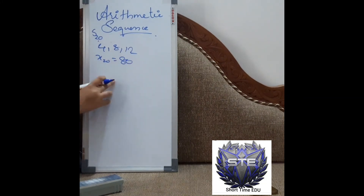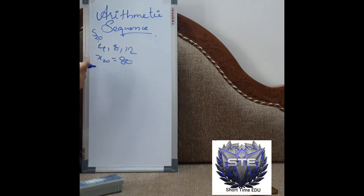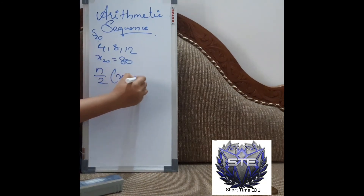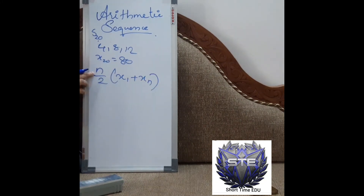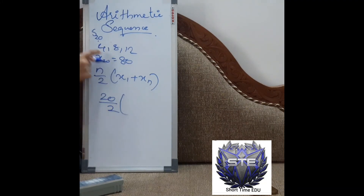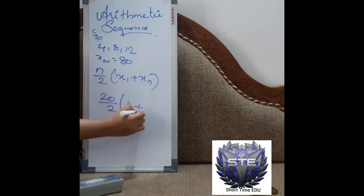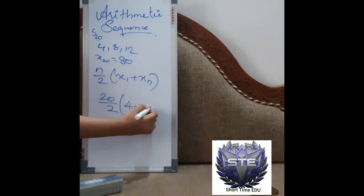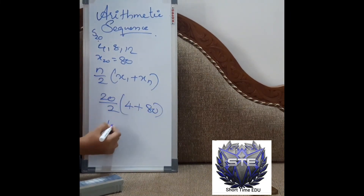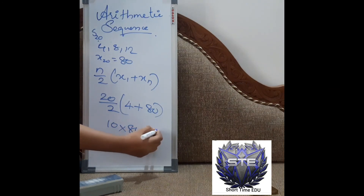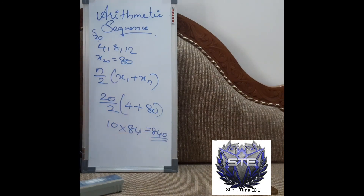Now we substitute into the sum formula: S equals n divided by 2 times (x1 plus xn). We have 20 terms, so S equals 20 divided by 2 times (x1 plus x20), which is 10 times (4 plus 80), that is 10 times 84, equals 840. So the sum of the first 20 terms of the sequence is 840.